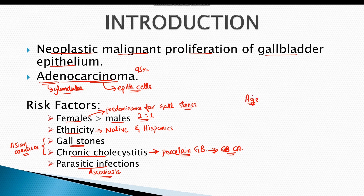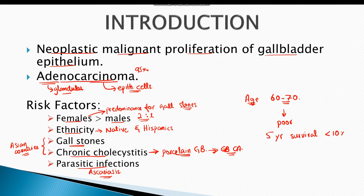The age of discovery is usually between 60 to 70 years. By that time, most patients are unfit for surgical removal. Therefore, the prognosis of gallbladder carcinoma is poor, with a 5-year survival rate of less than 10%.